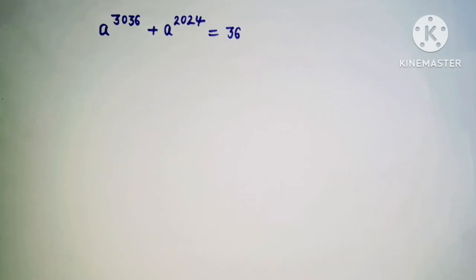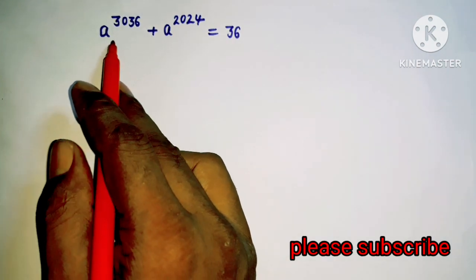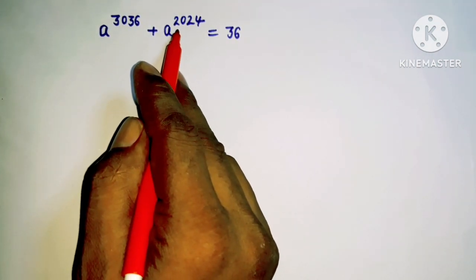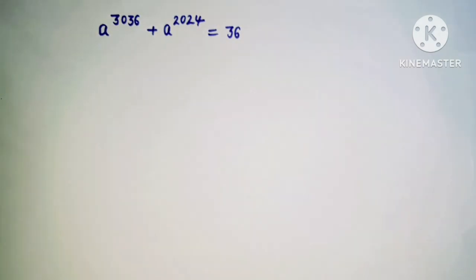Welcome back to Olympiad learning. Today we have an amazing question that is on your screen. We have a to the power 3036 plus a to the power 2024 equal to 36.